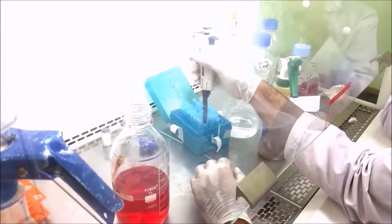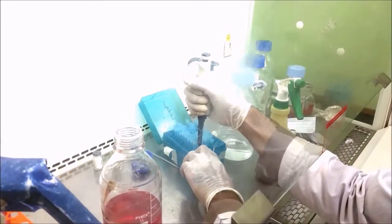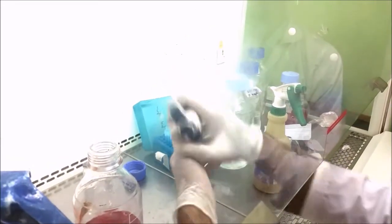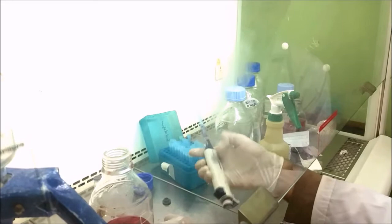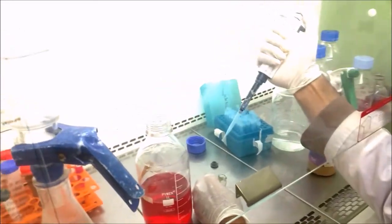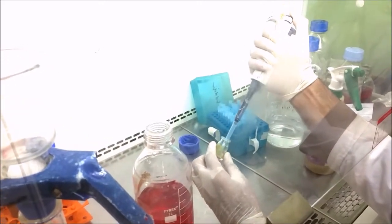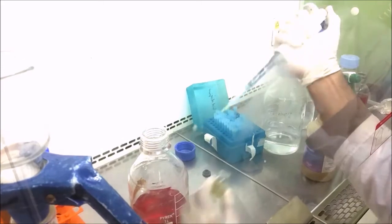Add about 1 lakh units of Streptomycin and Penicillin into 1 liter of media. As we are going to prepare about half liter of media, we will add about half of the Streptomycin and half of the Penicillin.